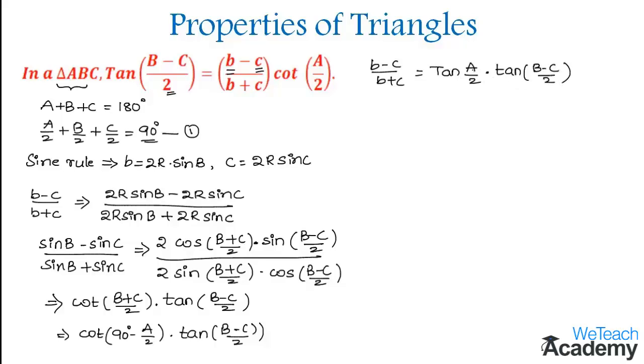Transferring tan A by 2 to the left-hand side, we get tan B minus C by 2 equals B minus C divided by B plus C times the reciprocal of tan A by 2, which is cot A by 2.